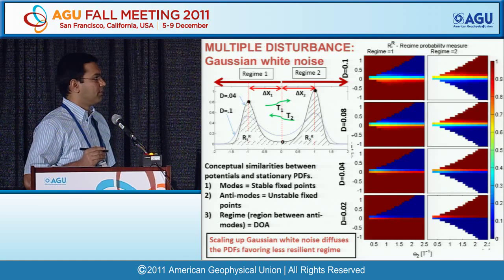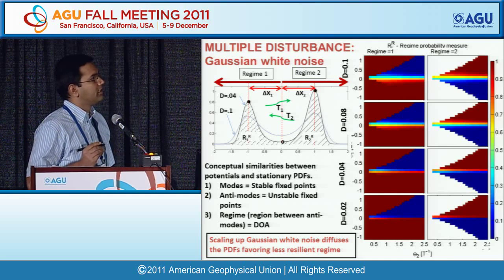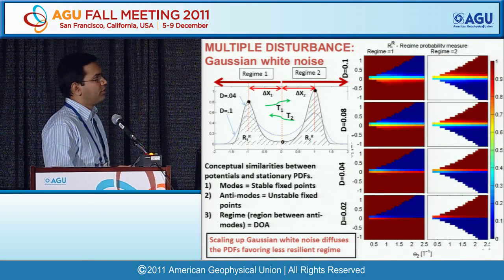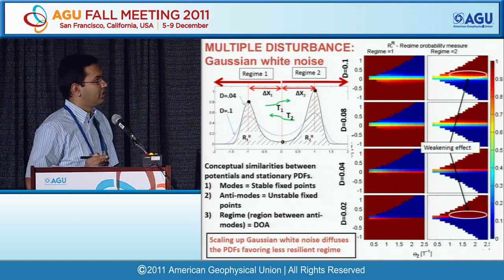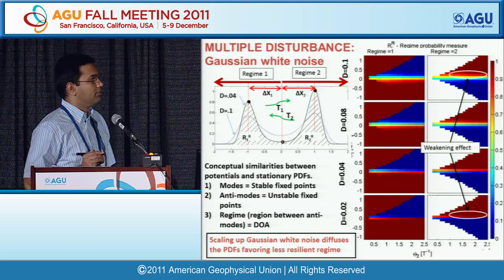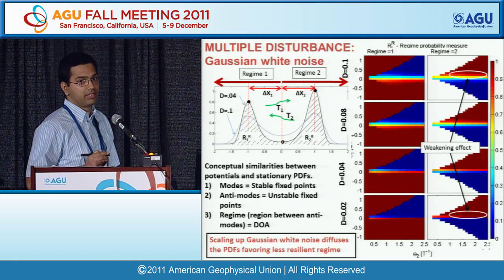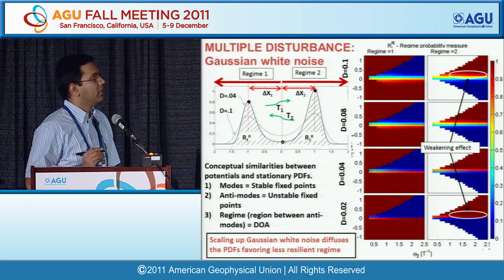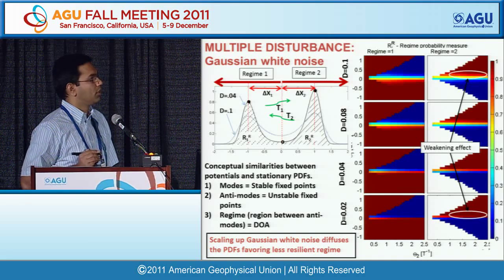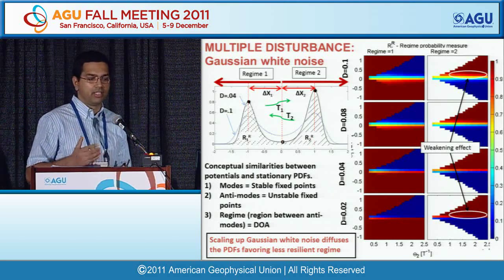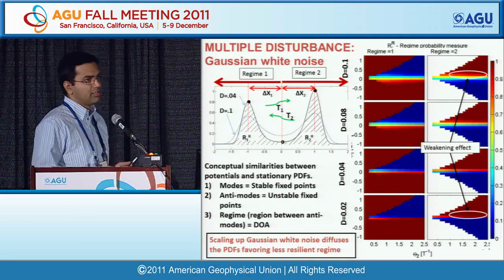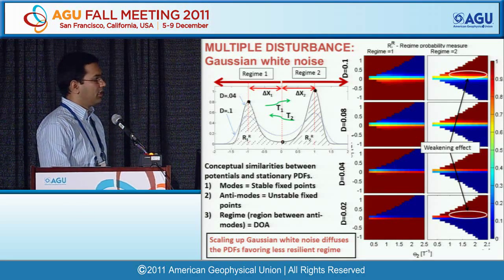This is a plot of theta-1 versus theta-2 at different noise levels. As noise increases, there is more diffusion. Counterintuitively, when you increase the noise, it favors the less favorable regime. For a low noise level, a highly resilient region becomes less resilient, while what was very low resilience becomes more resilient. So noise is actually favoring the less resilient regime. These kinds of insights can be brought out using quantitative measures.